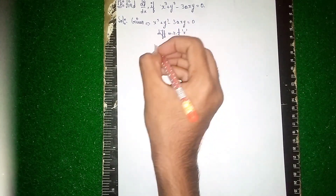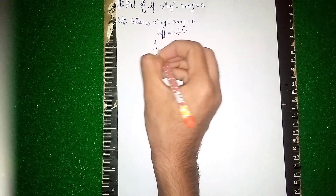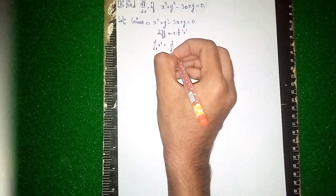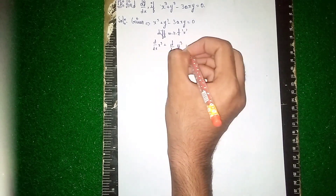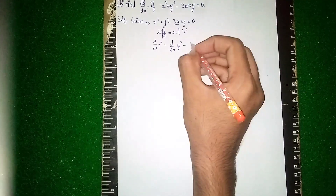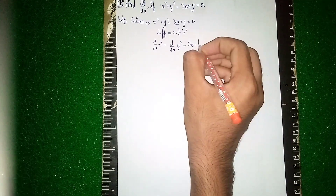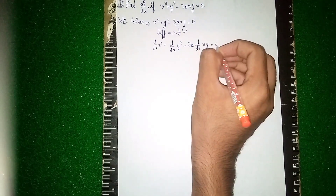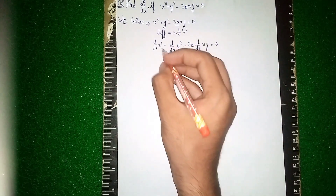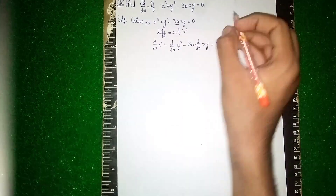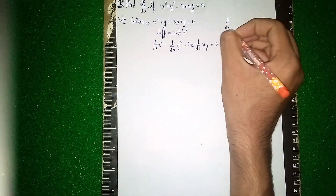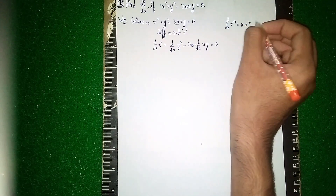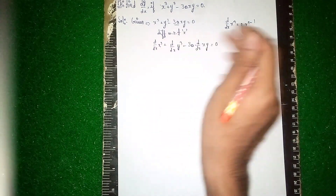It becomes d/dx of x³ plus d/dx of y³ minus, now 3a is a constant so it comes outside: 3a into d/dx of (x·y) equals 0.